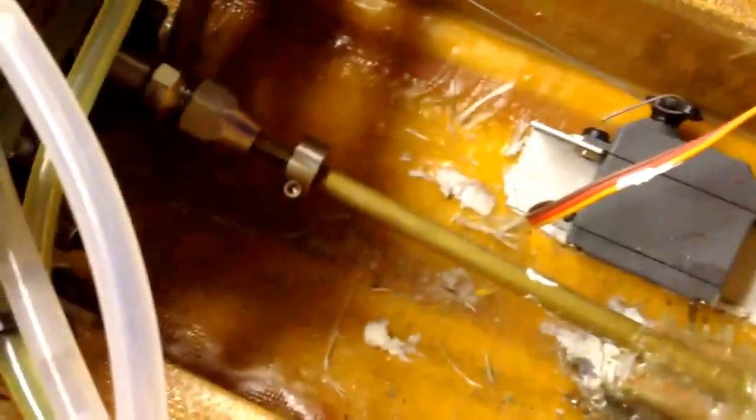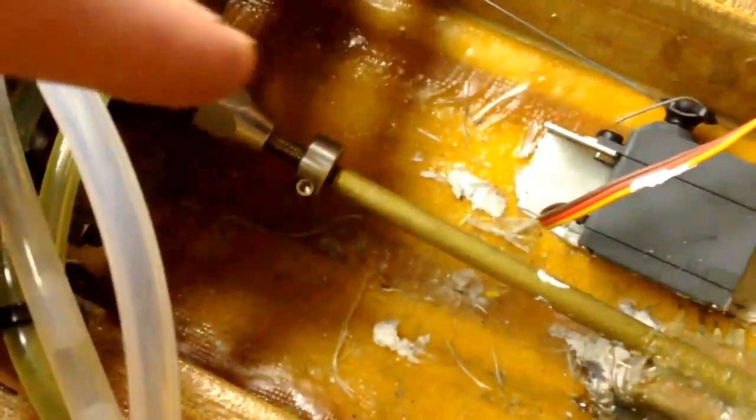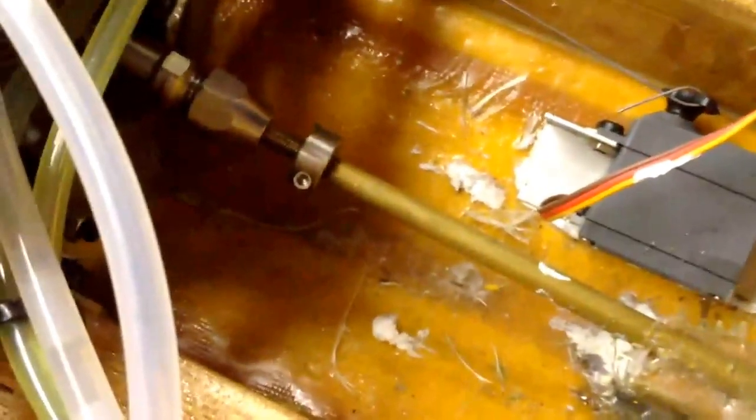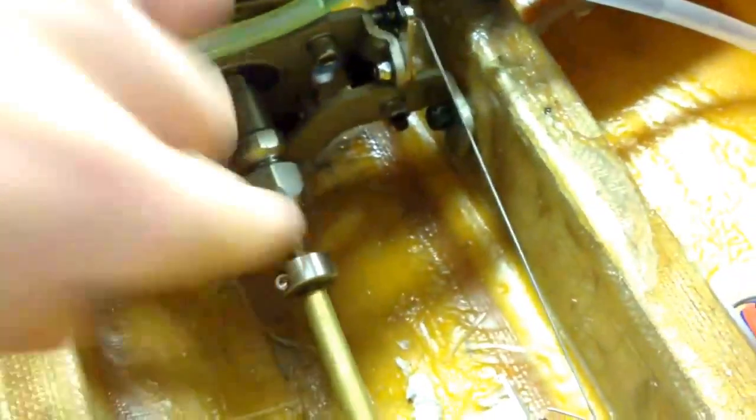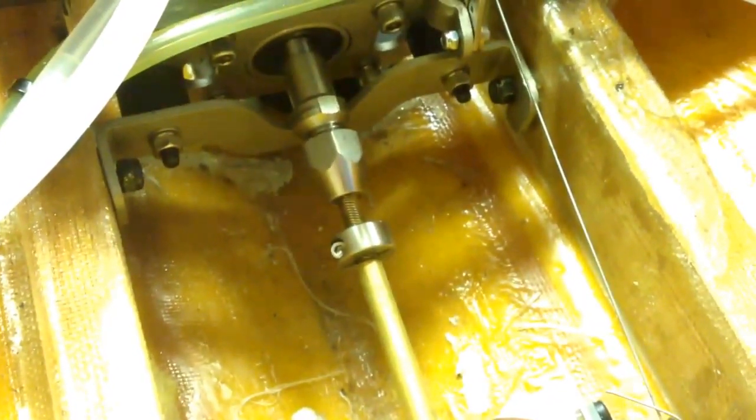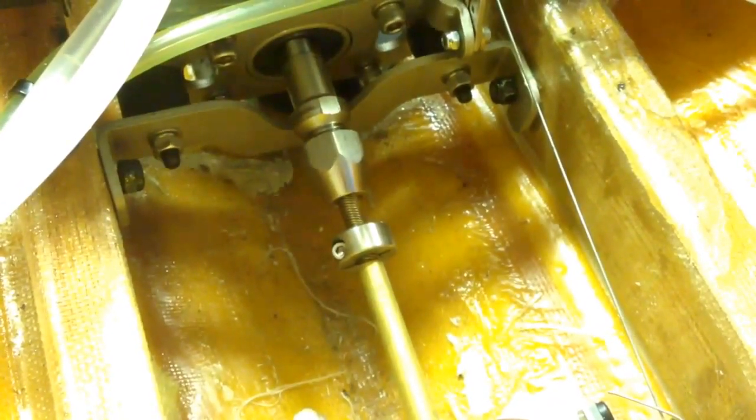There is a, I forget what this spacer is called off the top of my head, but it was $3.50 shipped. And there is a collet, which is this piece right here, that connects your flex shaft to your motor. That was actually pretty expensive, it cost me $27 shipped.